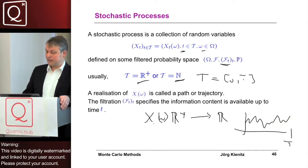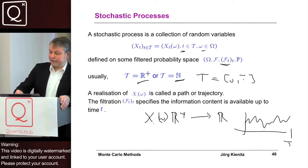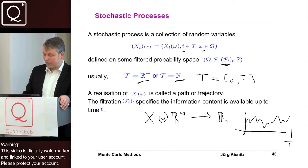On the other hand, if we fix this T and take the dependence on omega, then it is a random variable.